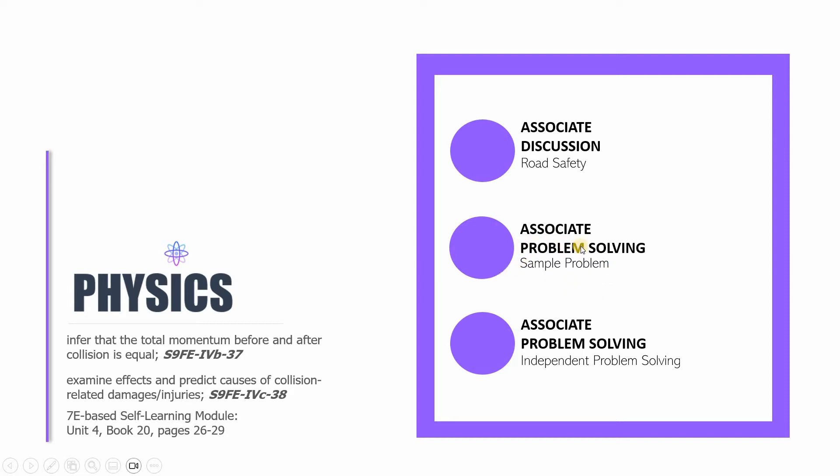So we'll be doing that through a sample problem, and then I will be asking you to solve your own problem under Associate Problem Solving Independent Problem Solving. Remember that this session is also based on the 7E-based self-learning module in Science 9, which I wrote. Specifically, you will find these parts on Unit 4, Book number 20, pages number 26 to 29. We are still covering the following learning competencies: infer that the total momentum before and after the collision is equal, and examine effects and predict causes of collision-related damages and injuries.